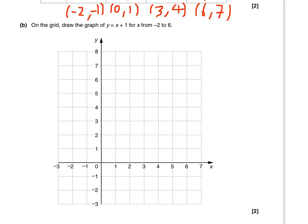Here we go. Minus 2, minus 1. Put a little cross. 0, 1. Put a little cross. 3, 4. Put a little cross.